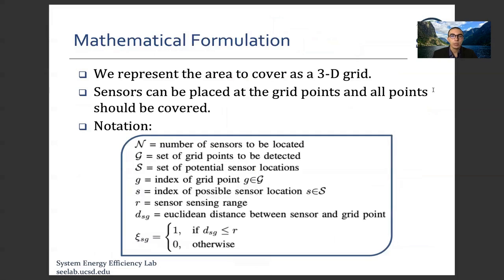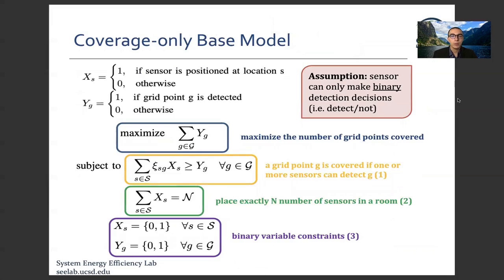Here is the mathematical formulation used for the rest of the presentation. We represent the area to be covered — the room — as a 3D space with x, y, and z dimensions. In the coverage-only base model, decision variable xs takes the value of 1 if a sensor is positioned at location s, and 0 otherwise. yg is 1 if grid point g is detected, and 0 otherwise.